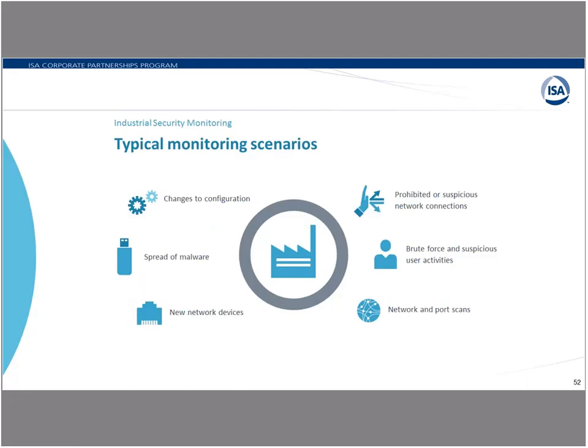Some of the typical monitoring scenarios we feel are important include: changes of configuration—production areas are often unmonitored, with many outstations, making it hard to detect configuration changes; brute force and suspicious user activities—for example, is it normal for a user to be sending data out of country every morning at 2 a.m.?; spreading of malware; and new network devices—nine times out of ten you'll never notice when a new network device has been placed in your network unless you have a monitoring scenario; as well as prohibited or suspicious network connections and port scans.